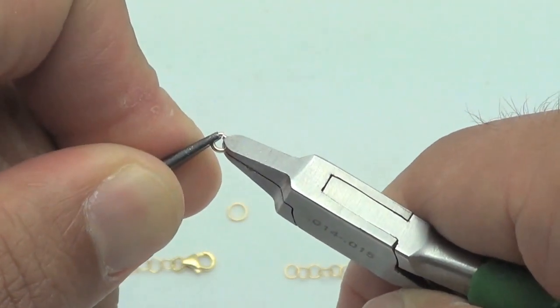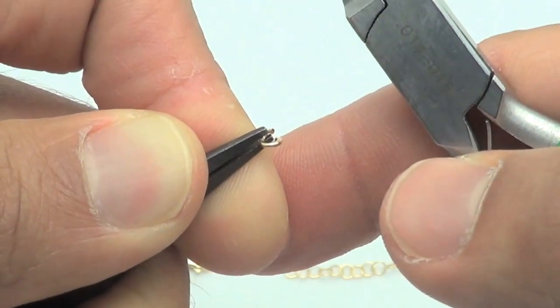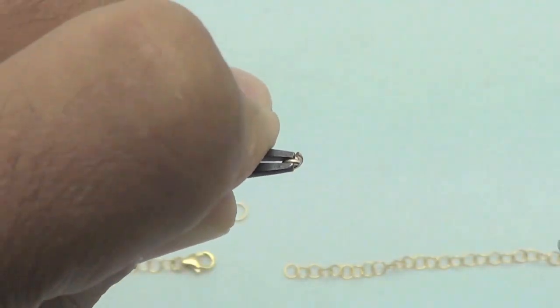So grab each side of the jump ring and open it the same way we did the first time around. I'll just show you that from the side.